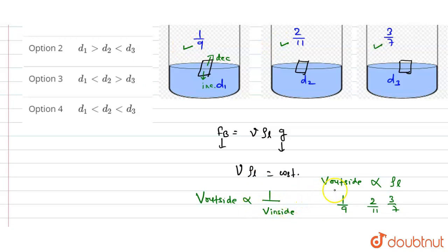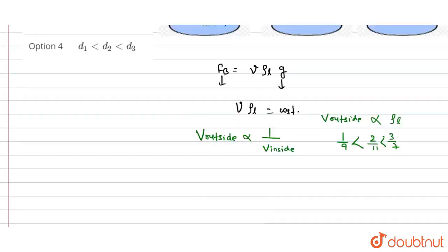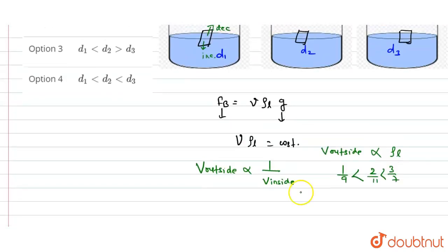Therefore, the volume outside is directly proportional to the density of the liquid, and therefore the density will be increased. And so we can write that the density is d1, d2, d3. Therefore, d1 < d2 < d3. Now we check this option,